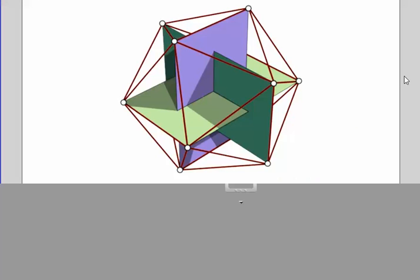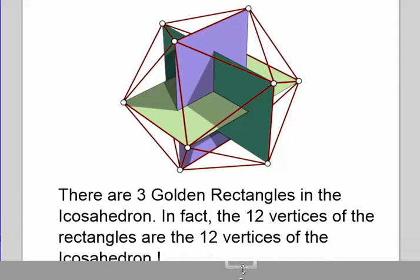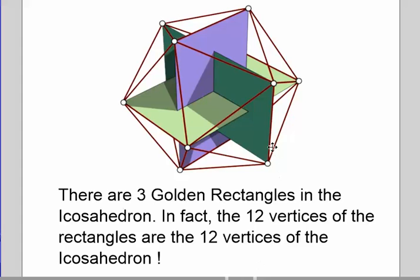And to end this video, I'd like to end with the icosahedron. The icosahedron is a lovely three-dimensional solid. It's made up of 20 triangles. And lo and behold, it has three golden rectangles on the inside. Each of these planes here, you can make this out of cardstock, is a golden rectangle. And the 12 vertices of the rectangles are, in fact, the 12 vertices of the icosahedron. Simply beautiful.